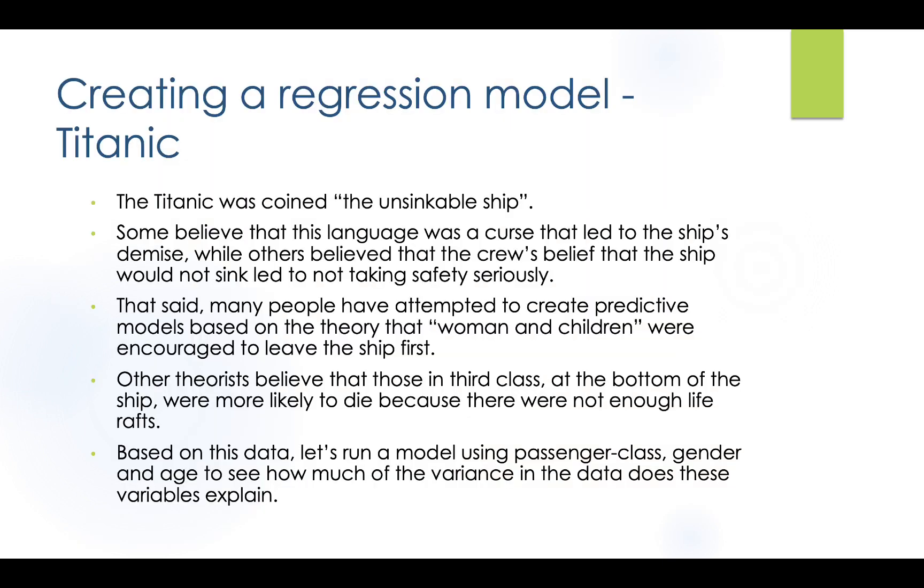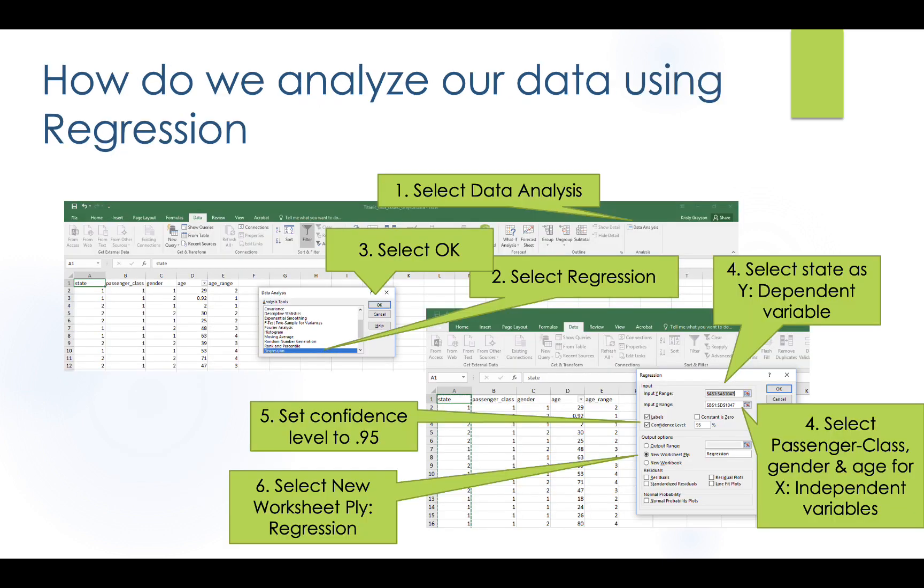So let's talk about the Titanic. How would you use this in the Titanic? So the Titanic was coined the unsinkable ship when it went on its maiden voyage. So there was a lot of hype that there's no way that this could ever sink, but some believe that this language was a curse that led to the ship's demise. While others believe that the cruise belief that the ship would not sink led to taking safety seriously. So many people have attempted to create predictive models based on the theory that women and children were encouraged to leave the ship first. Other theorists believe that those in third class or at the bottom of the ship were more likely to die because they were not, they didn't have a life raft. Based on the data, let's run a model using passenger class, whether it's first, second, or third, gender and age to see how much variance this data has and how much it explains.